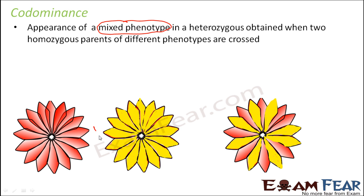For example, if you cross a red flower with a yellow flower: as per Mendel, you get a red flower because red is dominant over yellow. As per incomplete dominance, you get neither red nor yellow — you get something in between, like orange. But if you get a flower where half the petals are red and half are yellow, both traits are being expressed — that is a mixed phenotype and this is called co-dominance.